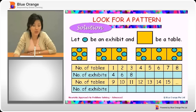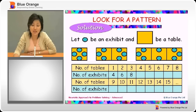Now what can you tell from the pattern 4, 6, 8? It is actually the two times table — each time we add another table, the number of exhibits increases by two.